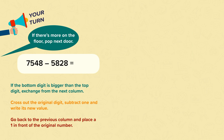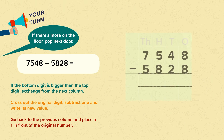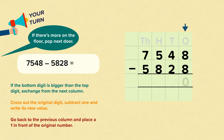Now it's your turn. Can you solve 7,548 subtract 5,828? Pause the video and have a go. Well done if you set out your calculation like this. You should have started at the ones: eight subtract eight is zero. Then onto the tens: four subtract two is two.